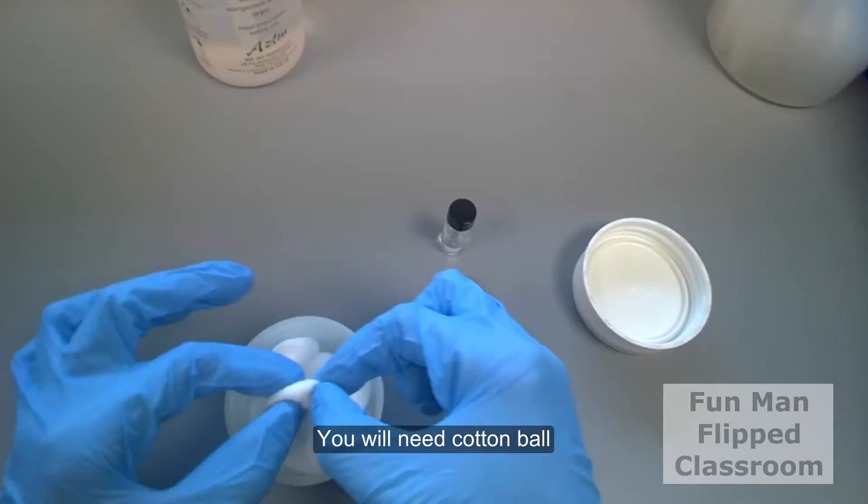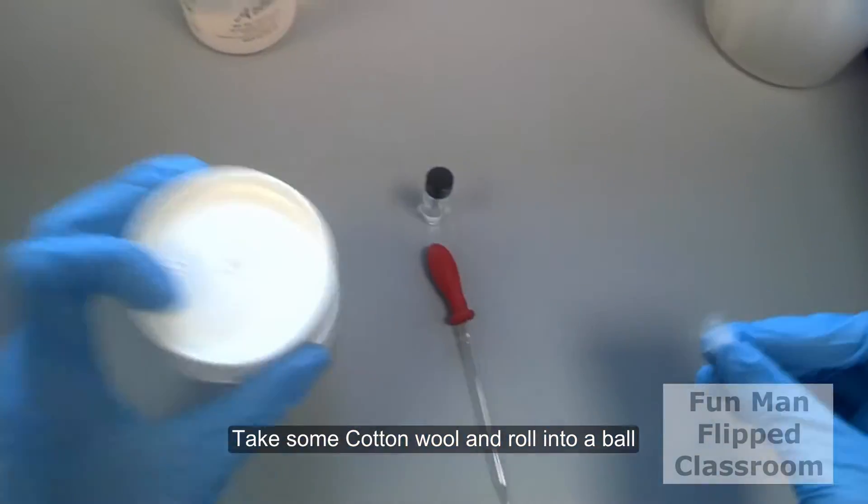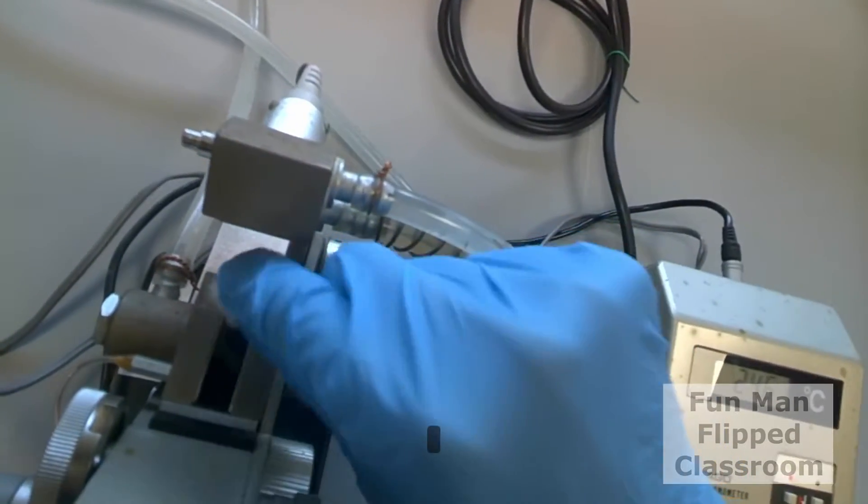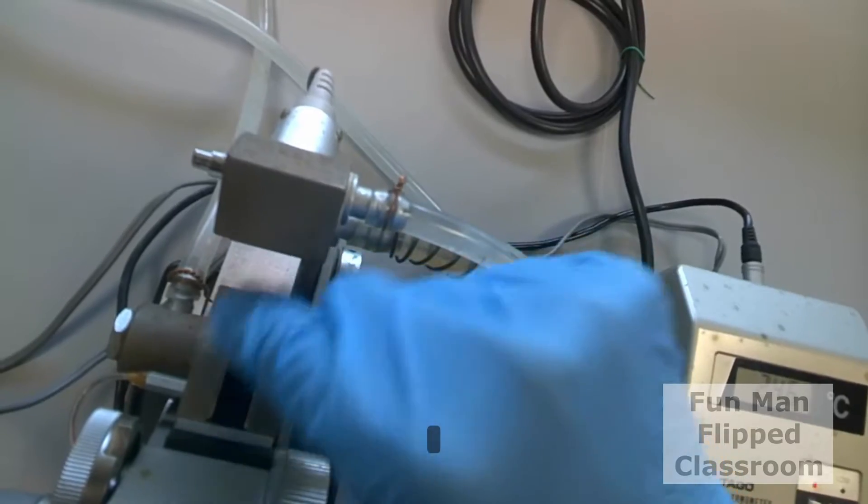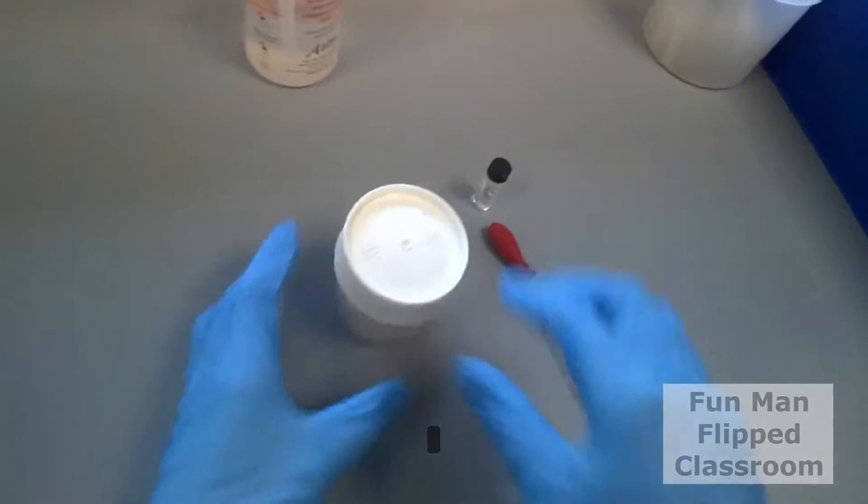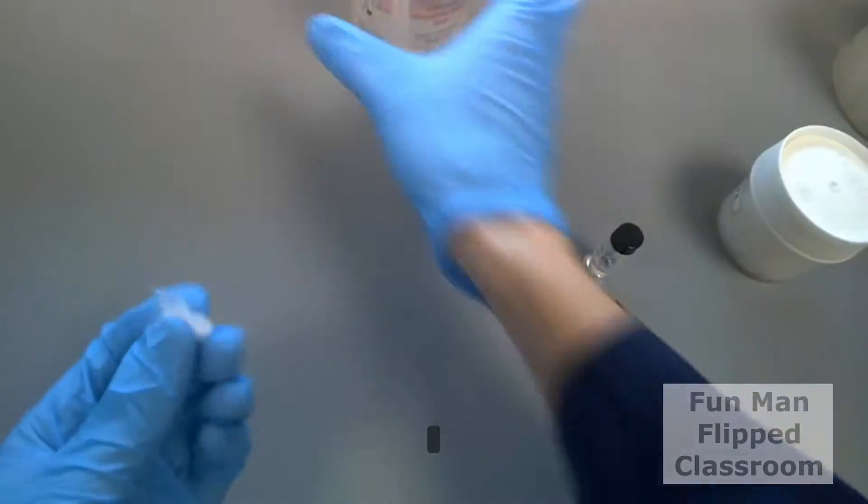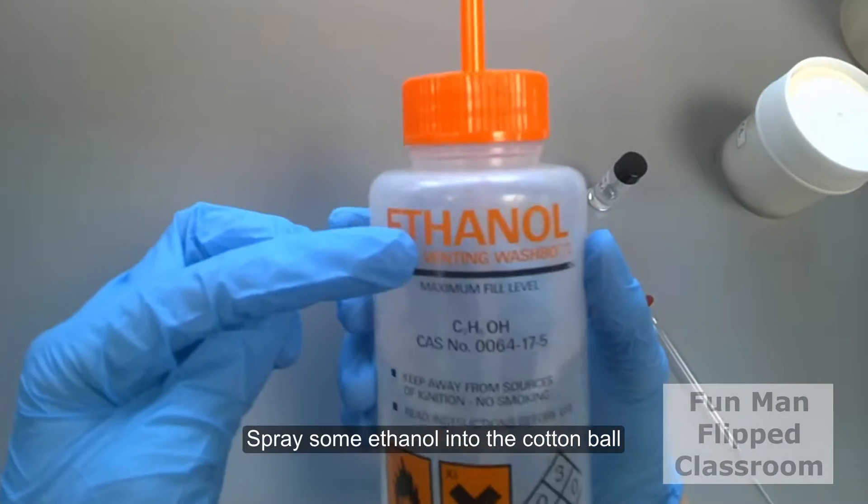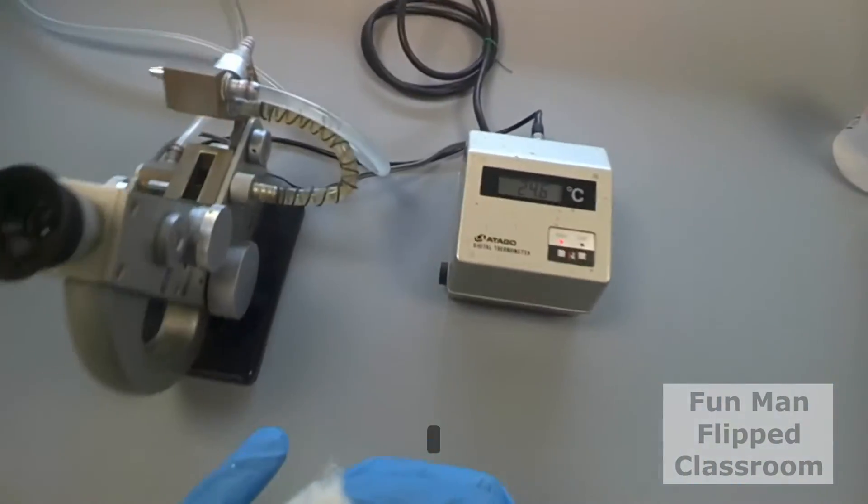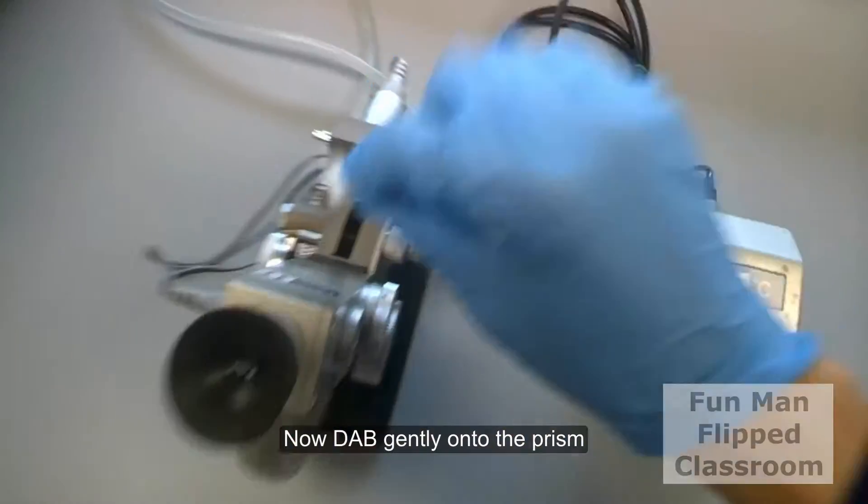You will need cotton balls. Take some cotton wool and roll into a ball. Take this dry cotton ball and lightly wipe the surface of the prism. Spray some ethanol into the cotton ball. Now dab gently on the prism.